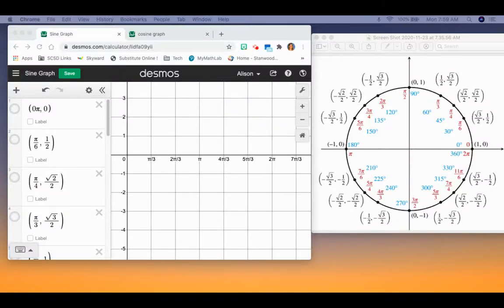For this video I want to show you how we can generate sine and cosine graphs using the unit circle. Here I have our 16-point unit circle, and in Desmos I've set up some points to make this video not super long, but I want to show you the connection.